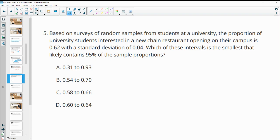Number five, based on surveys of random samples of students at a university, the proportion of university students interested in a new chain restaurant opening on their campus is 0.62 with a standard deviation of 0.04. Which of these intervals is the smallest to likely contain 95% of your sample proportions?